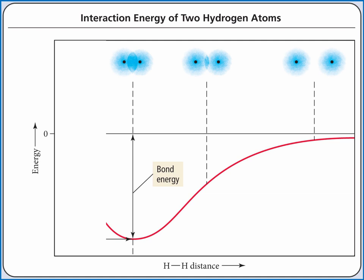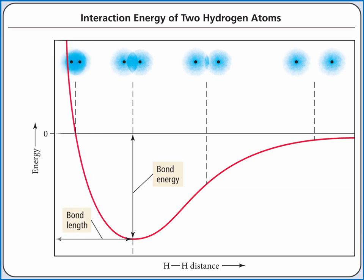This is the amount of energy given off when a bond is formed between two hydrogen atoms. If we continue to bring the nuclei closer, the energy of our system will increase as the nuclei repel each other. The distance between the two nuclei at the minimum energy is the bond length.